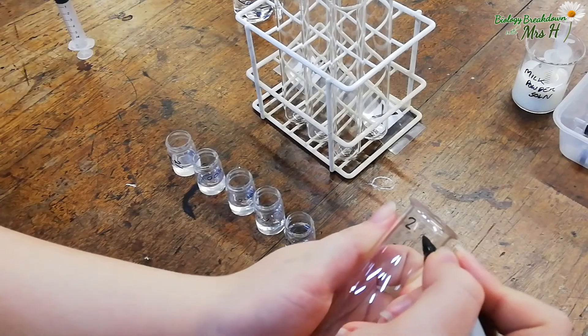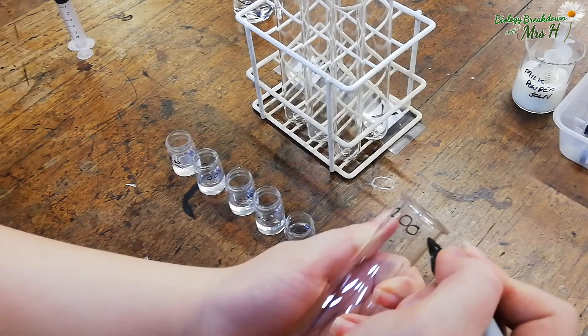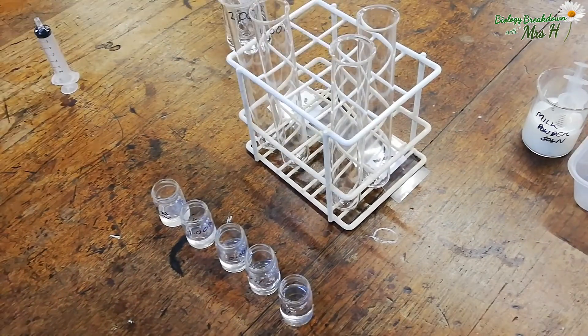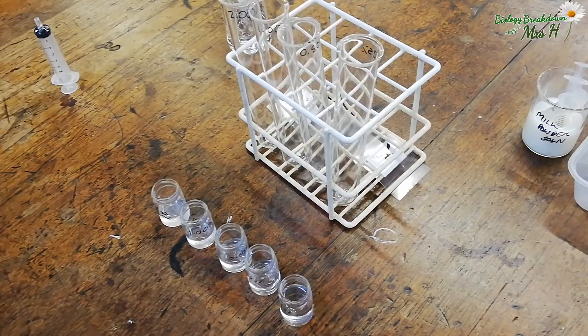Then you need to label 6 boiling tubes with the corresponding concentrations. Do that at the top of each boiling tube so that it doesn't rub off when it's in the water bath.